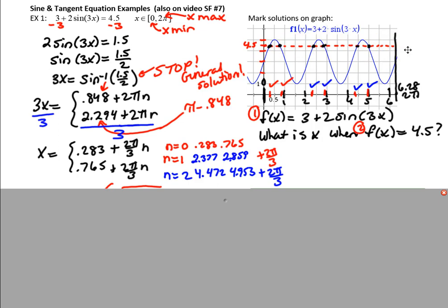So when I ask you to check using the graph, mark those solutions on the graph, what I'm asking you to do is to graph one side of the equation as your function, graph the other side of the equation as the desired y value, and then see if the x coordinates for all of those points where those two graphs intersect match your solutions.